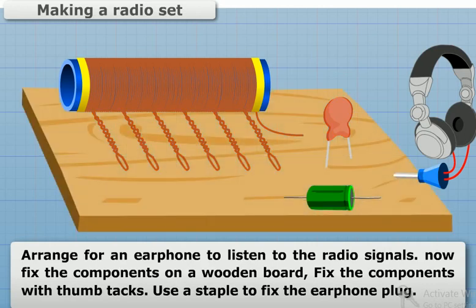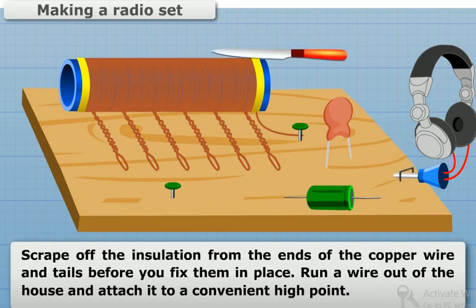Now fix the components on a wooden board. Fix the components with thumb tacks. Use a staple to fix the earphone plug. Scrape off the insulation from the ends of the copper wire and tails before you fix them in place.